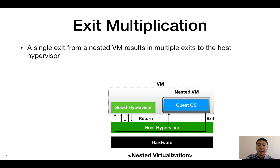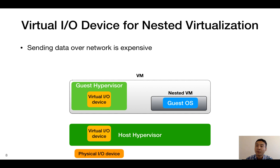To better understand the overhead of nested virtualization, let me give you an example. When a hypervisor runs a VM, it is typical that the hypervisor provides virtual I/O devices, such as a network card, to its VM. With nested virtualization, both the host and the guest hypervisor provide virtual I/O devices to their own VMs respectively. So when a nested VM wants to send data over the network, this is what's going to happen. First, the nested VM will make data ready and will execute an instruction to talk to a network card to send the data.